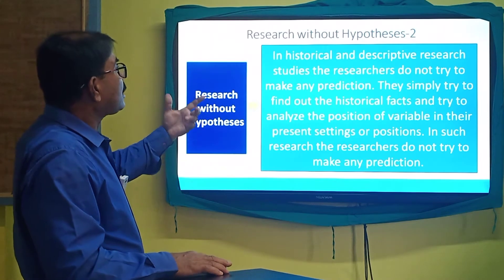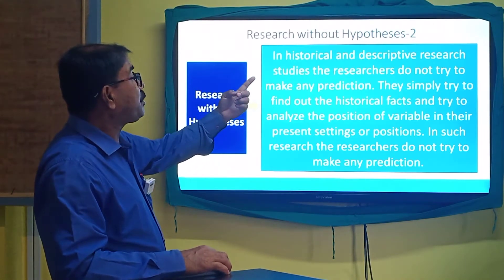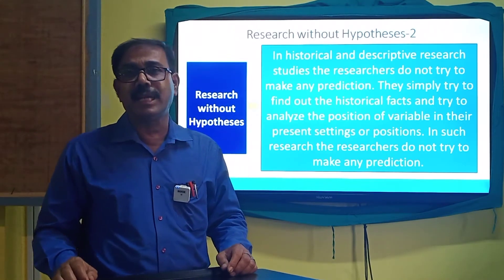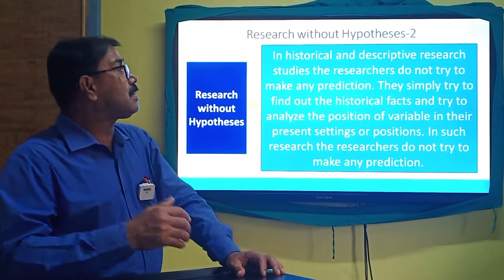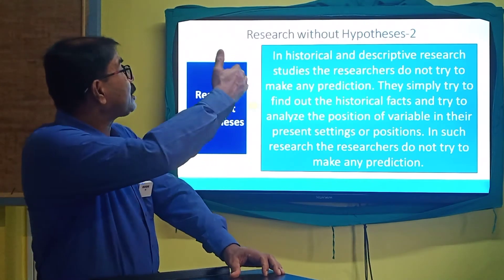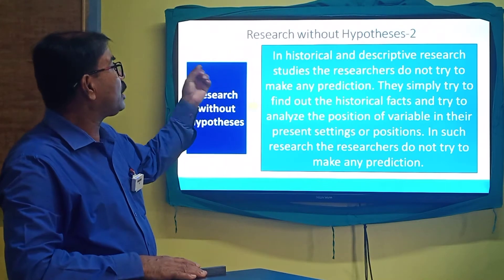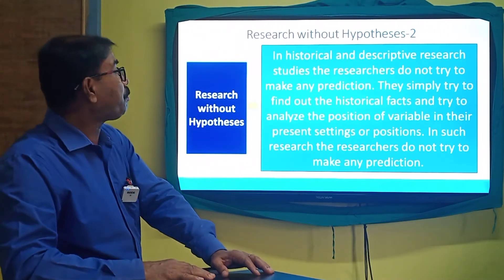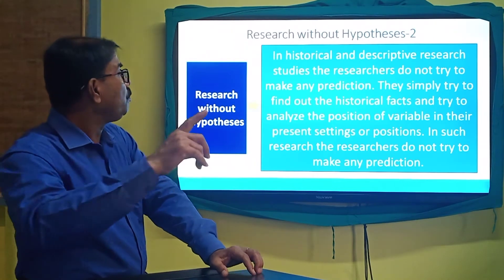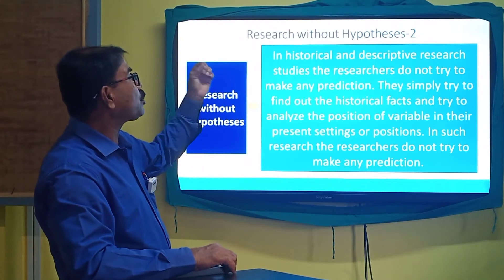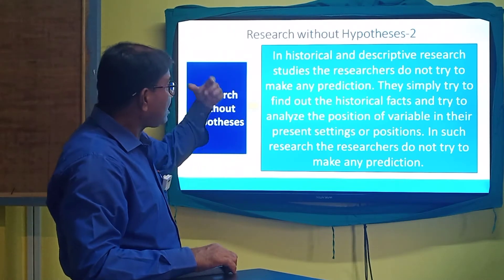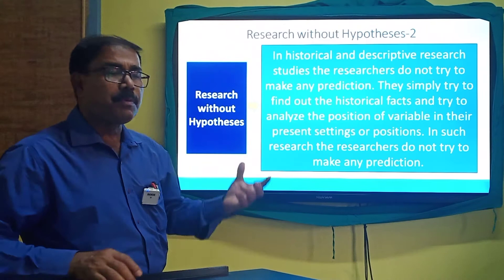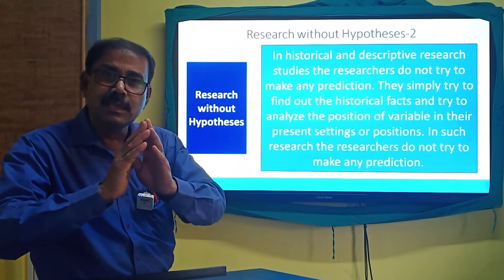For example, in historical and descriptive research studies, researchers do not try to make any prediction. In the field of science, the issue of prediction arises, but in the field of social sciences — say, in the field of history, in the field of philosophy or philosophical studies — there is no question concerning prediction. Qualitative research methodologies are followed in such areas, so the issue of framing a hypothesis does not arise.